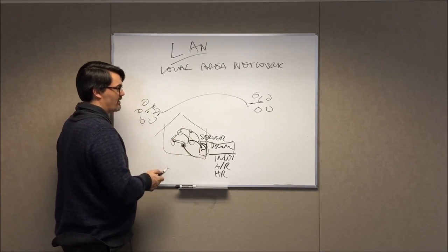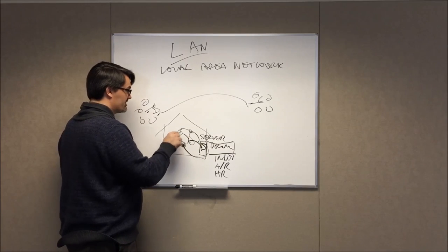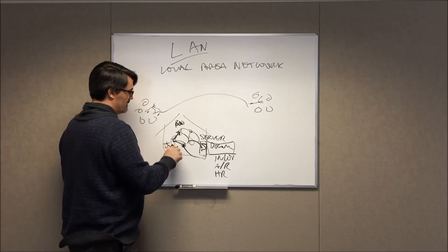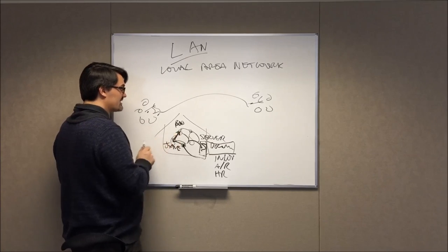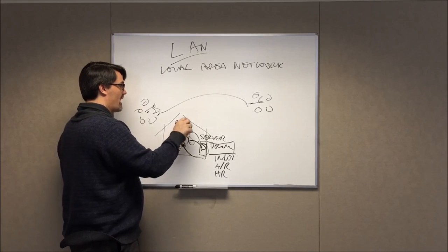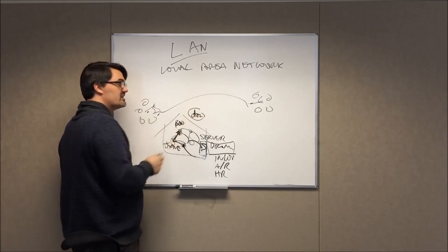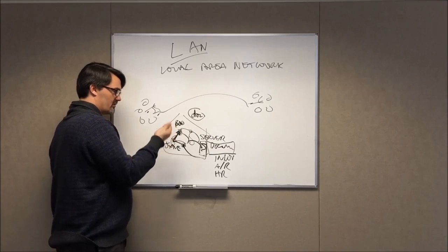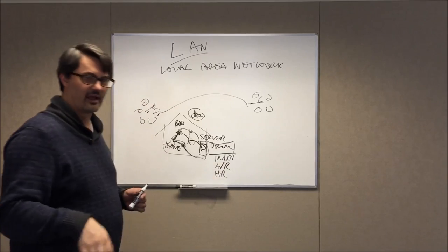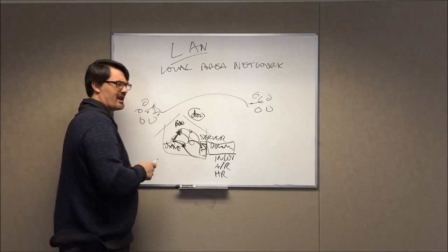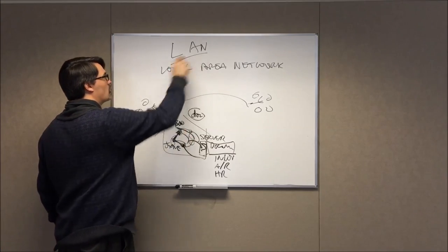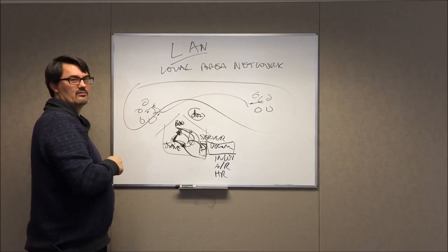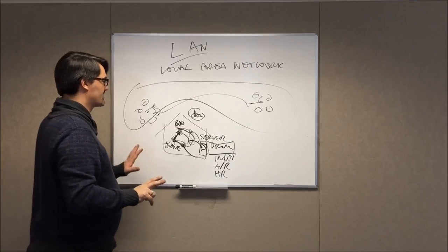All the computers in the network have access to that server and typically to each other. If employee Bob has a file that Jane needs, she's physically connected via wiring and can log onto his drive and get the document rather than copying it to a flash drive and walking it over. That's a local area network — as opposed to networks that cover a wide area, like the world.